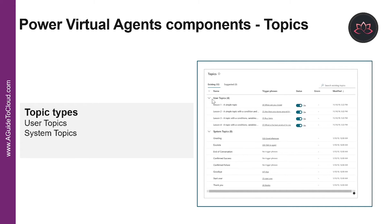Let's look at user topics and system topics. There are four pre-populated user topics titled as lessons. These lesson topics can be used to help understand simple to complex ways of using nodes to create chat bot conversations. Then we have system topics as well — a number of pre-populated topics that you are likely to need during a chat bot conversation. It is recommended to keep these and use them until you are comfortable with creating an end-to-end chat bot conversation.